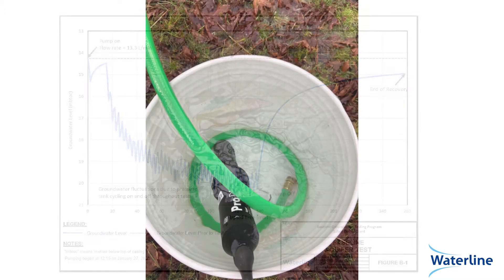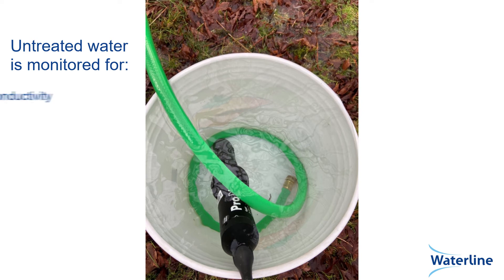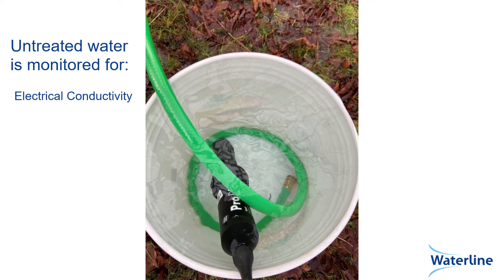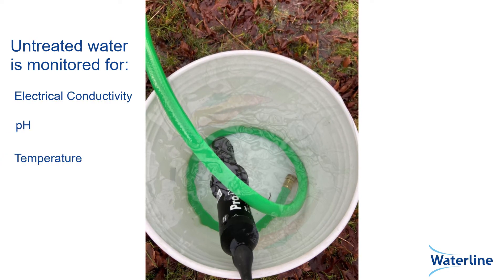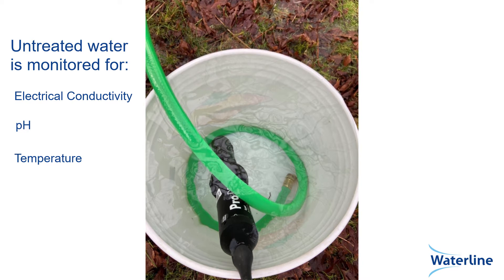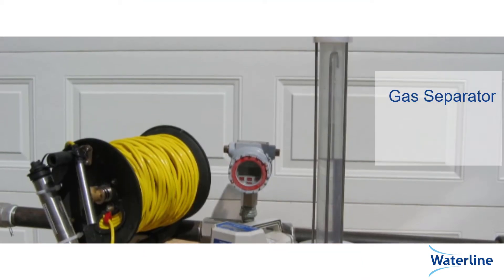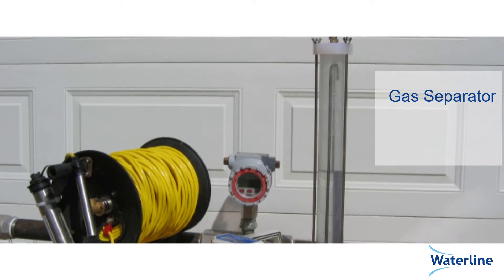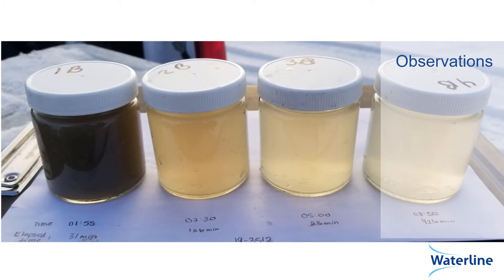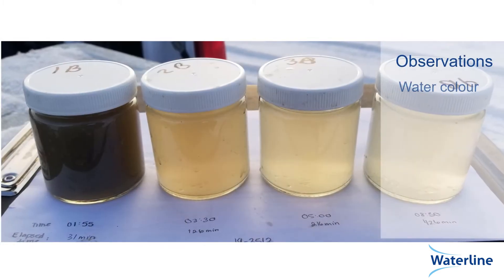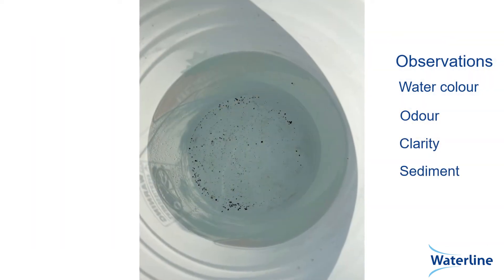During the baseline yield test, untreated groundwater is monitored periodically for electrical conductivity, pH, and temperature at a sampling point upstream of any water treatment system. Groundwater may be flowed through a gas separator to test for the presence of free gas, and observations such as water colour, odour, clarity, and the presence of sediment will be recorded.